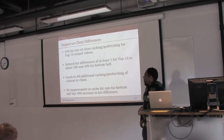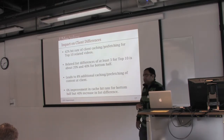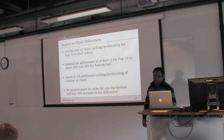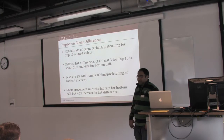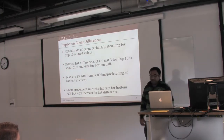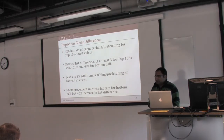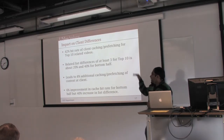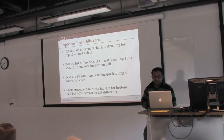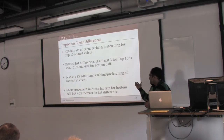From client caching and prefetching, we showed a 42% cache hit rate for the top 10 related videos and 48% for the top 20. Given the 20% related list difference for the top 10 and 40% for the bottom half, to maintain the same 42% cache hit rate we need to prefetch an additional 8% of content on the client. This is better than caching or prefetching an additional 40% to achieve only a 6% improvement from the bottom half.